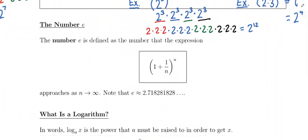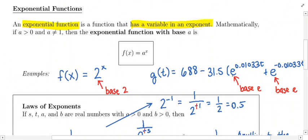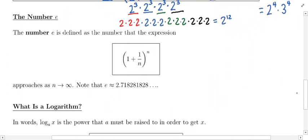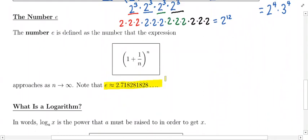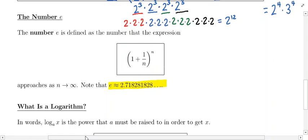The last thing I want to talk about in this review of exponential functions is the number e. When I was making up exponential functions earlier, I used e as a base in g(t). The number e is a lot like pi — it's a decimal that keeps going forever and does not repeat. E is approximately 2.718281828. Mathematically, e is defined as the number that the expression (1 + 1/n) raised to the n power approaches as n gets bigger and bigger.